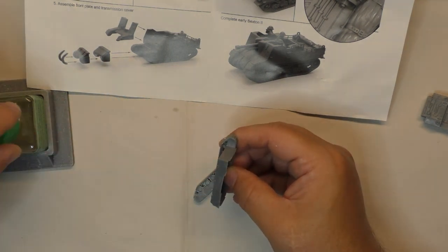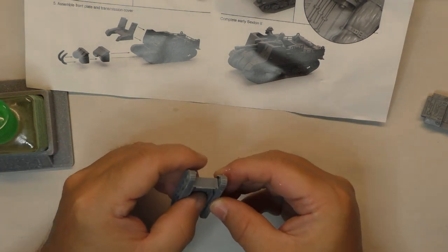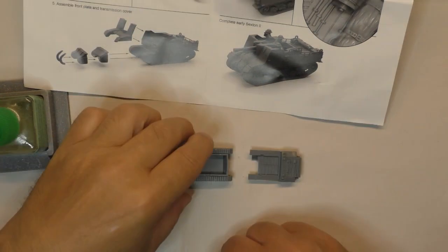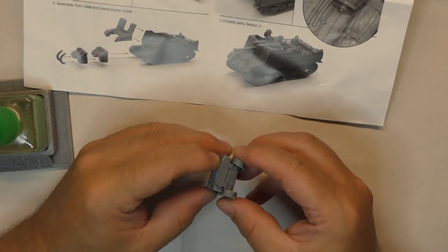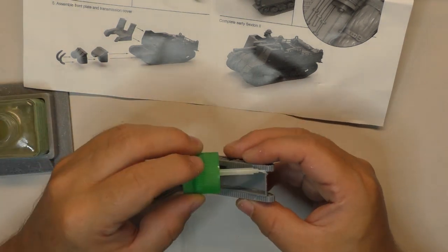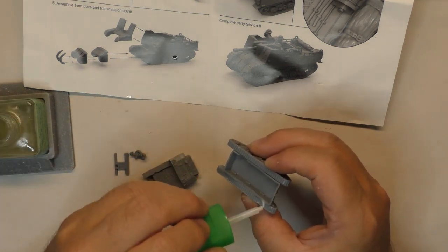First what they recommend to do, and I will follow the step-by-step of the Plastic Soldier Company, is to install the track to the lower case of the vehicle. You really have to be careful and pay attention that the drive sprocket goes in front of the vehicle. So when it's built.